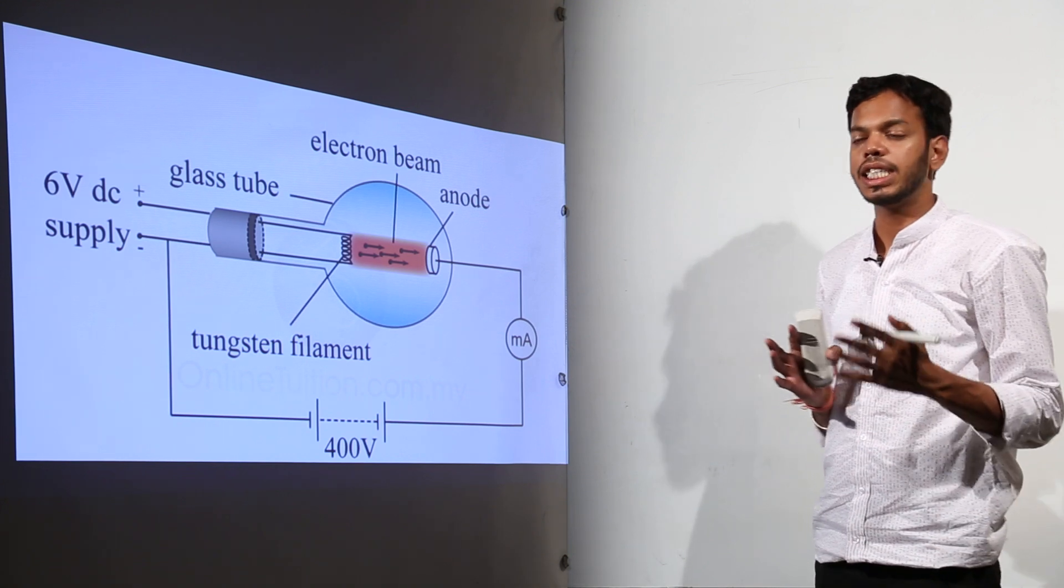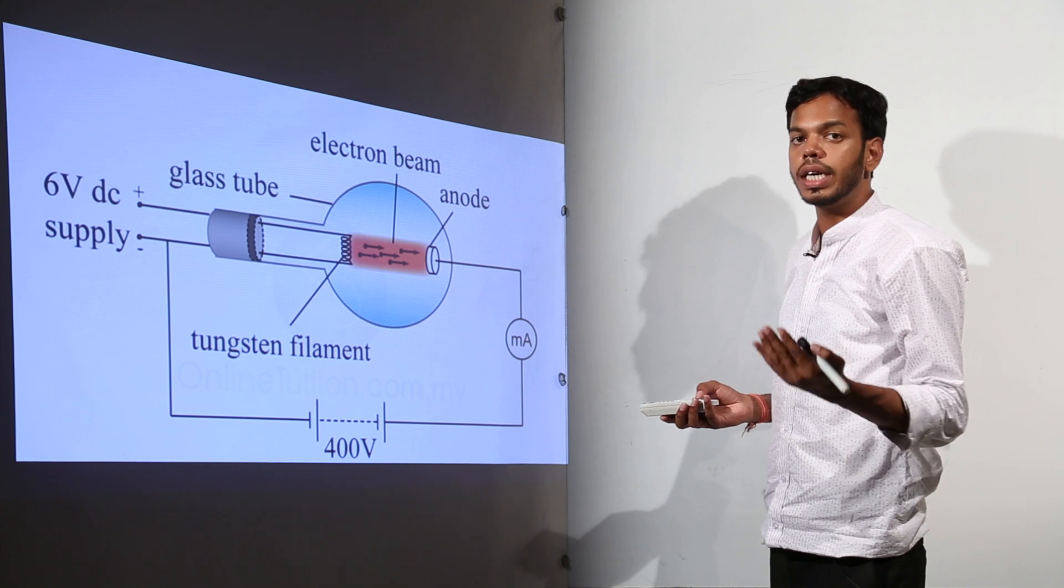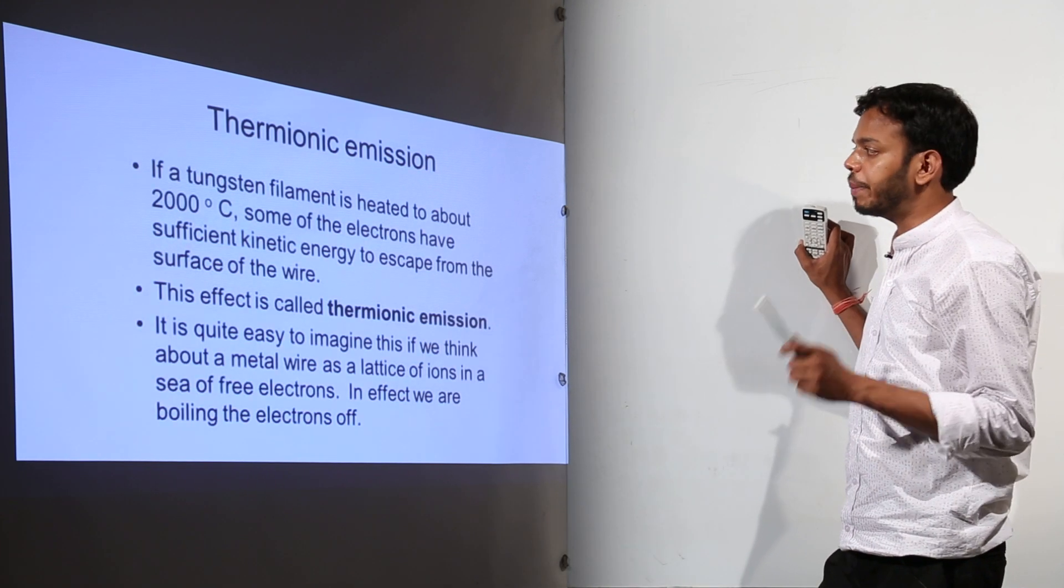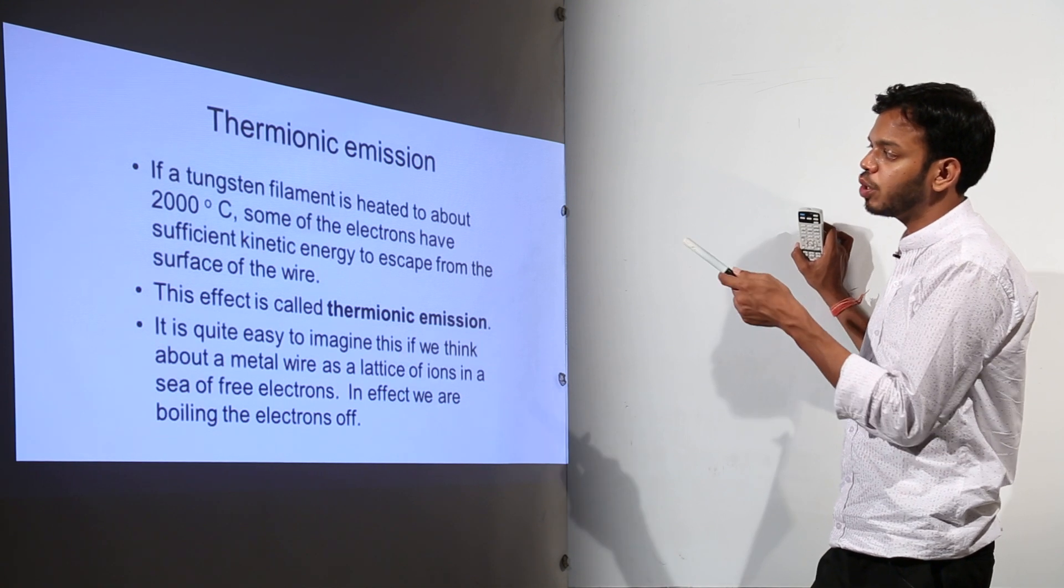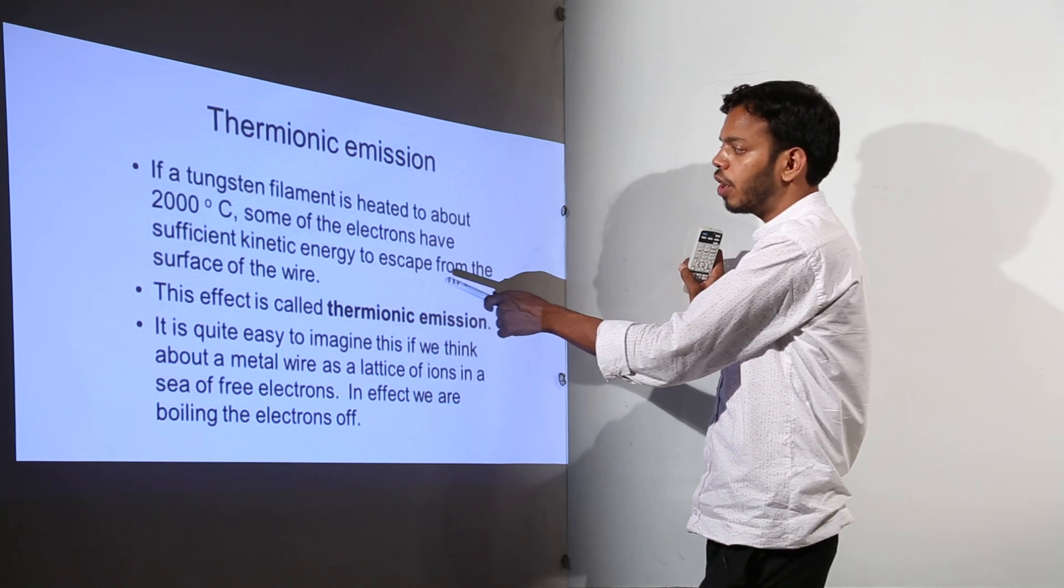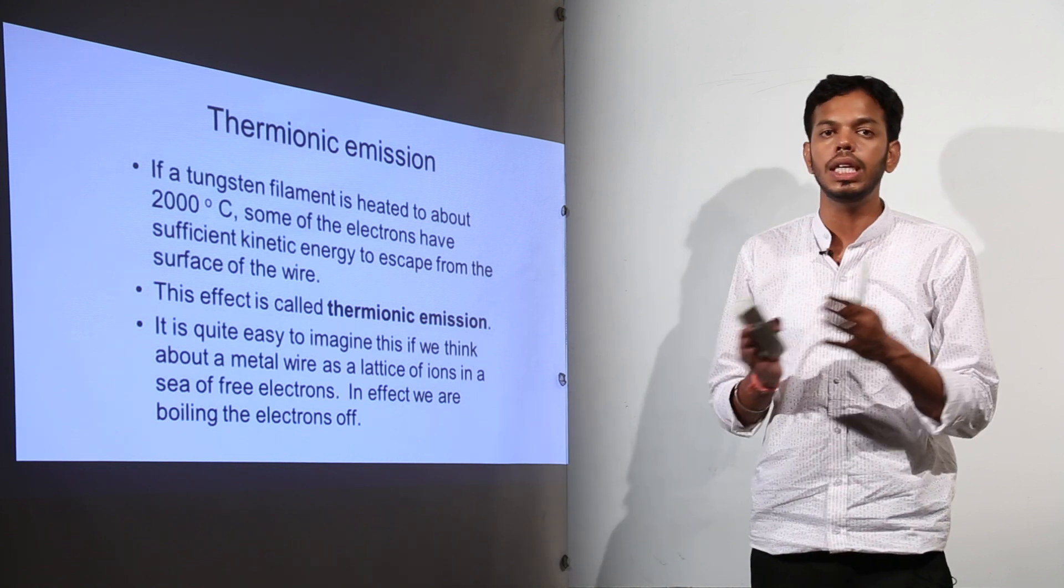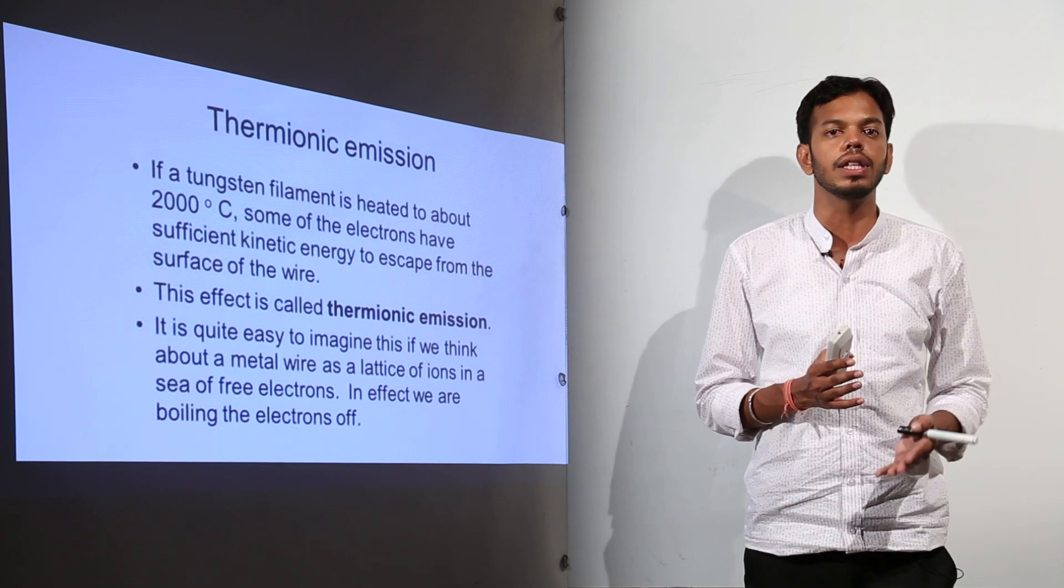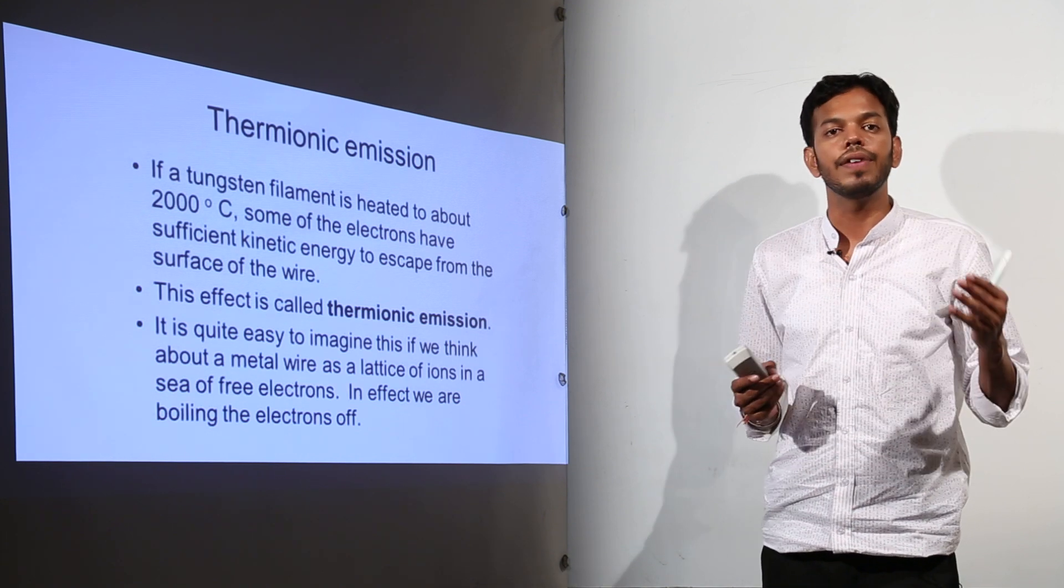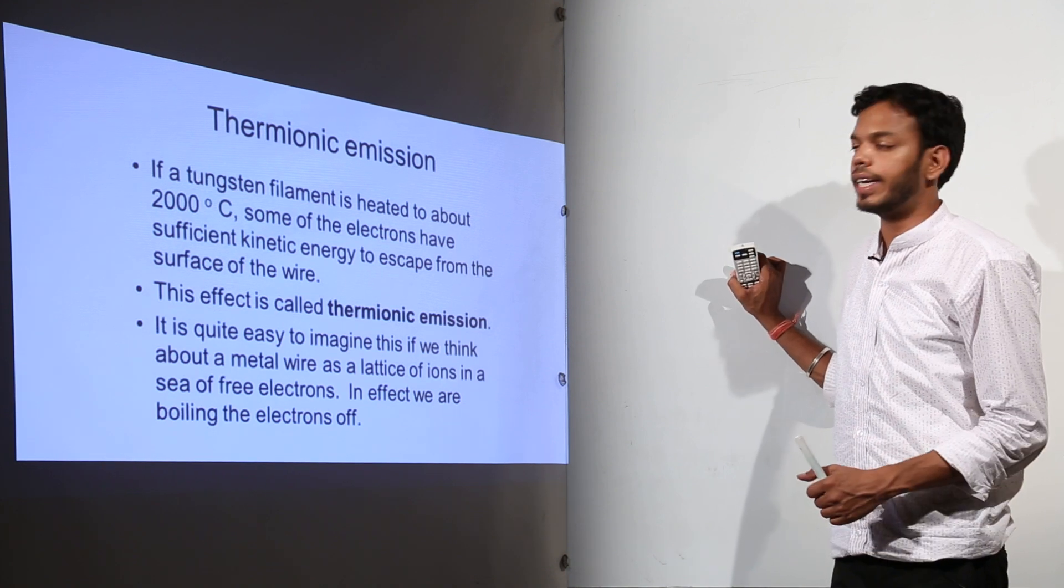Let us recap what we have learned in thermionic emission. We are talking about the experiment now. If the tungsten filament is heated up to 2000 degrees Celsius, some of the electrons have sufficient kinetic energy to escape from the surface of the wire. This effect is called thermionic emission. This goes with the definition which we started with, that is the phenomenon of emission of electrons from the metal surface when heat energy is provided to the metal.